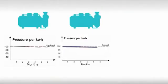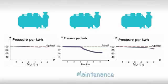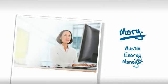A common reason for high energy costs is loss of asset efficiency over time — for example, degrading pressure per kilowatt-hour in pumps. Hence, a second quick way to save on energy is by proactively maintaining assets' performance so their energy efficiency is maximized. Let's see how Mary, the Austin energy manager, identifies such assets.